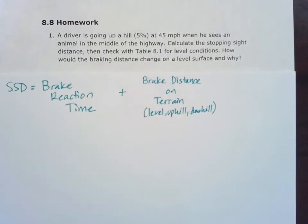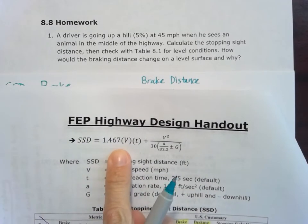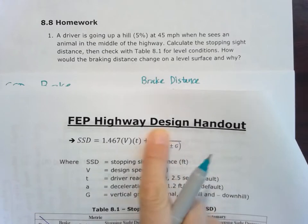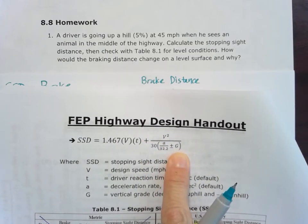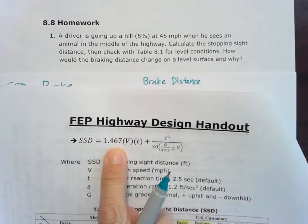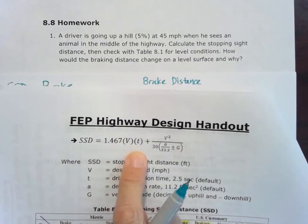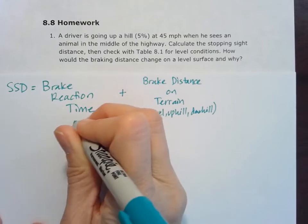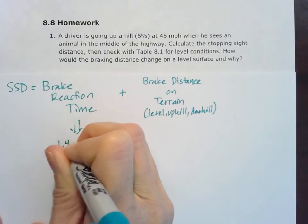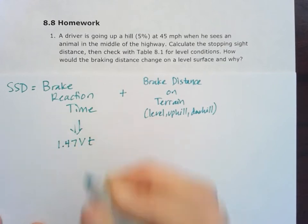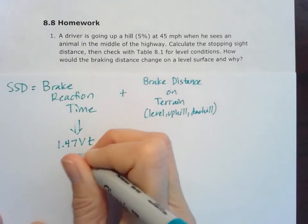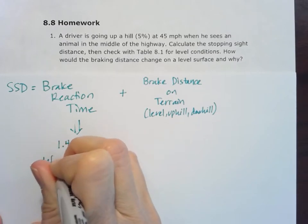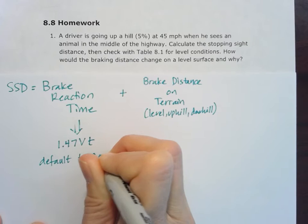So because of that, for that brake reaction time, we can use a formula. We know that formula from our handout here. We have two components: the brake reaction time and the brake distance on our terrain. This lets us put in a grade or we could just put zero for level terrain. We have this 1.467 VT. The 2018 AASHTO Green Book uses 1.47, so we'll go ahead and update to that. We'll use 1.47 VT for this brake reaction time and use that default value for time of 2.5 seconds.